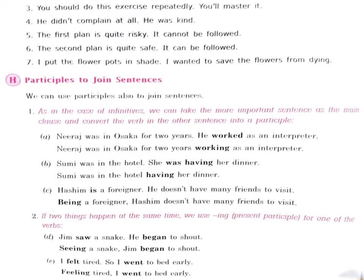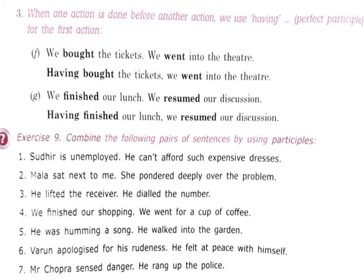'Hashim is a foreigner; he doesn't have many friends to visit' — 'Being a foreigner, Hashim doesn't have many friends to visit.' If two things happen at the same time, we use the present participle 'ing' form. 'Jim saw a snake; he began to shout' — 'Seeing a snake, Jim began to shout.' 'I felt tired; I went to bed early' — 'Feeling tired, I went to bed early.' When one action is done before another, we use 'having' plus the third form — the perfect participle. 'We bought the tickets; we went into the theater' — 'Having bought the tickets, we went into the theater.'